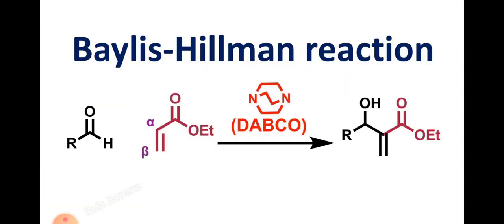In a simple reaction example, an aldehyde reacts with a conjugated olefin molecule in the presence of DABCO, giving the product. The conjugated part of the alkene is retained, reduction of the carbonyl group takes place, and there is formation of the carbon-carbon bond.